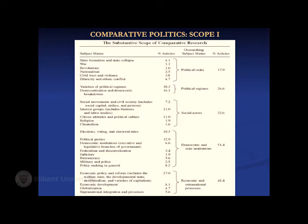Then comes political regimes, appearing in more than a quarter of all writings — varieties of political regimes, democratization, and democratic breakdowns. Different types and models, processes of democratization, democratic stability and breakdown. And finally, counting about 18% of articles, is political order: state formation, state collapse, wars, revolutions, nationalism, civil wars and violence, and ethnicity and ethnic conflict.